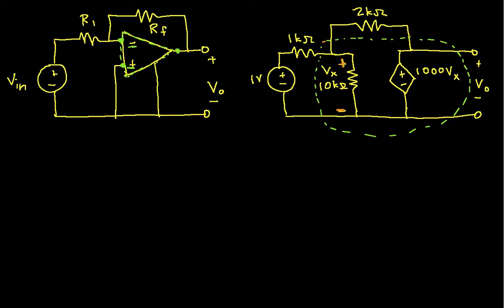The first thing we notice is that the output, Vout, that's the voltage from here to here, which is the same as the voltage across the dependent voltage source. So Vout is 1000 times Vx. If I can solve for Vx, then I will be able to solve for Vout. It'll be pretty easy.